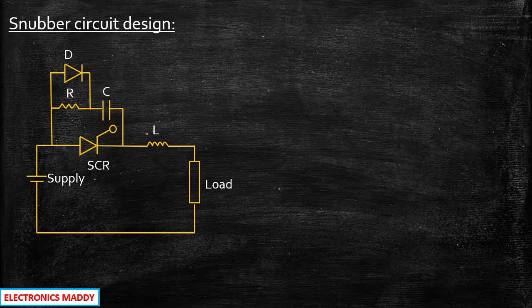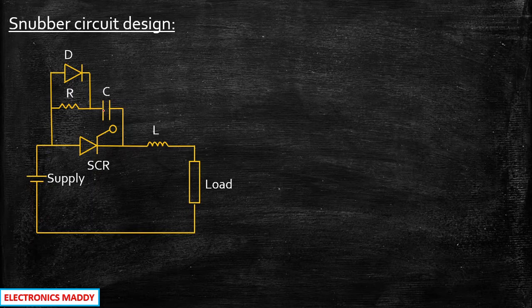An inductor is connected in series to prevent dI/dt, that is sudden change in current. We know the property of the inductor that it does not allow sudden change of current according to Lenz's law, and that is why it is connected in series. A capacitor is connected in parallel across the SCR for dV/dt protection — it does not allow sudden change in voltage, and that is why we have connected it in parallel.